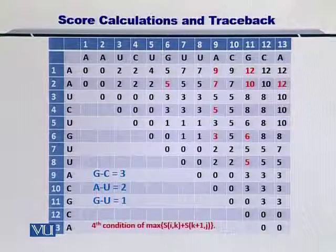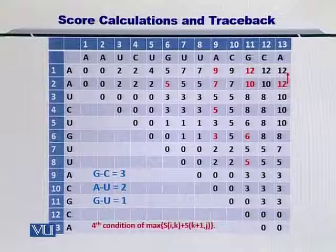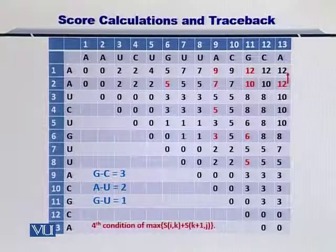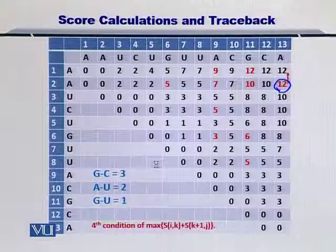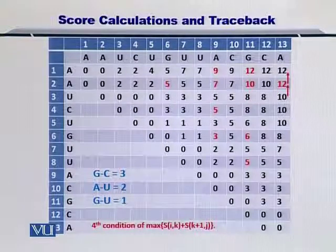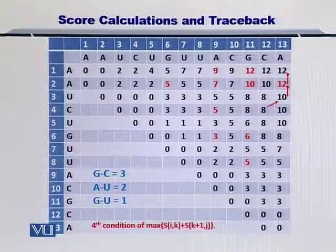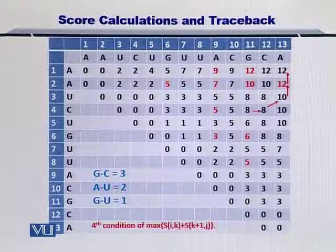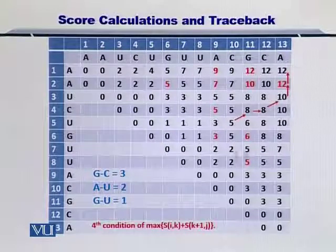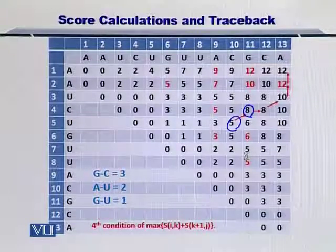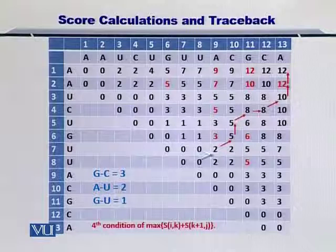Starting from the last position, that is 12, we know during our calculations that this 12 was actually taken from the bottom element. Next, this 12 came from the bottom element as well, as shown by the second arrow. And this 10 actually came from the 8 that resulted in the score of 10, and this 8 came from the same row. And this 8 came from the diagonal as well, and so on and so forth.